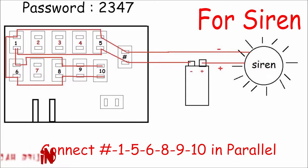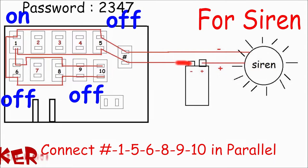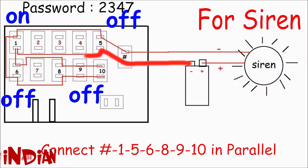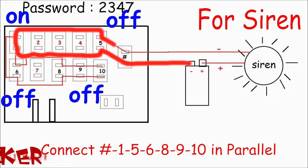This circuit is for a siren. Connect all switches other than 2, 3, 4, 7 in parallel. So if anyone will turn on any switches like number 1, current will pass through it and it will turn on the siren.